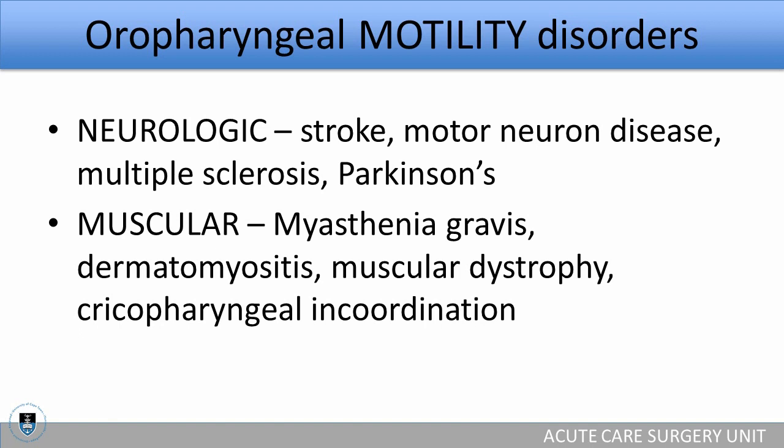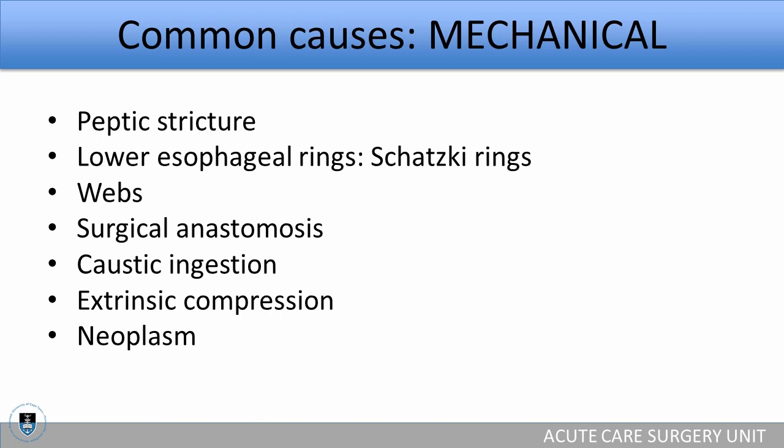Oropharyngeal motility disorders shouldn't be forgotten, since obstruction can happen in any part of the anatomical esophagus. These can broadly be classified into neurological underlying pathology — strokes, motor neurone disease, multiple sclerosis, and Parkinson's — and muscular pathology including myasthenia, dermatomyositis, muscular dystrophy, and cricopharyngeal incoordination.